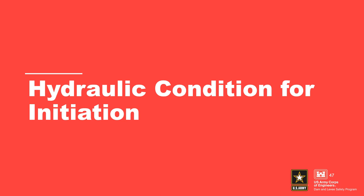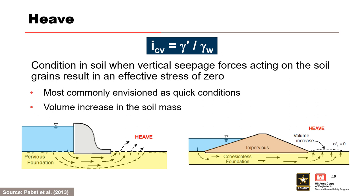Node 3 of the typical event tree assesses the likelihood that sufficient exit gradient exists to initiate backward erosion piping at an unfiltered exit. There is a critical gradient above which a particle is detached — local or exit gradient considerations. For vertical exit conditions, heave is a condition when the saturated sand specimen subject to upward seepage suddenly decreases in density and increases in permeability. The vertical hydraulic gradient at this condition is referred to as the critical gradient, describing zero-effective stress — more commonly envisioned as quick conditions.